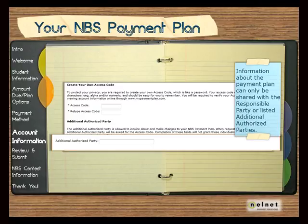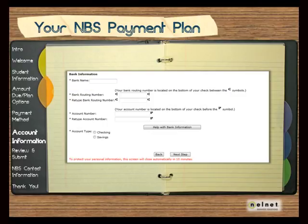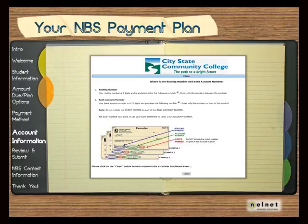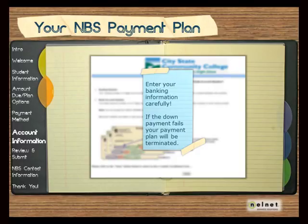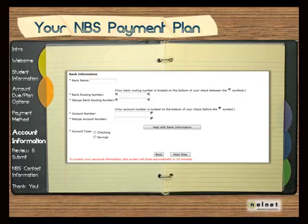If you have selected to have payments processed from your bank account, enter the required information. If you need assistance locating your routing or account number, select the Help with Bank Information button. Be careful when entering your account information so it is accurate. If your down payment and or enrollment fee are returned by your financial institution, your payment plan will be terminated. Once you have completed all of the required information, click on the Next Step button to continue.